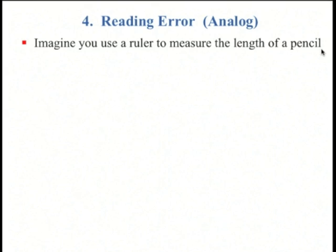Reading error. There's two types of reading error: ones that you get from analog instruments such as a ruler or something with a needle on a dial, and there's digital reading error, like you'd get from something with a digital display on it. So let's start with analog.